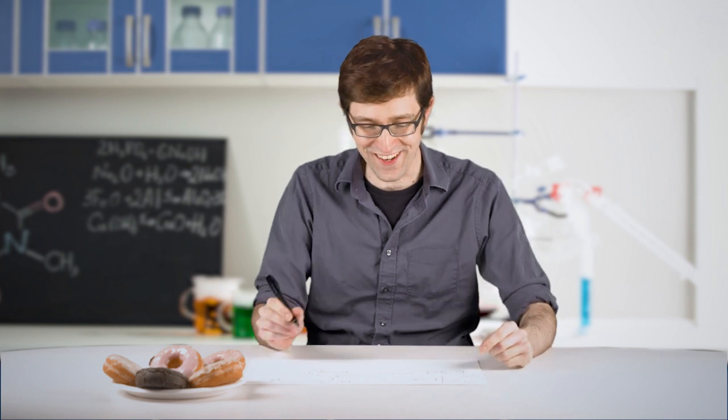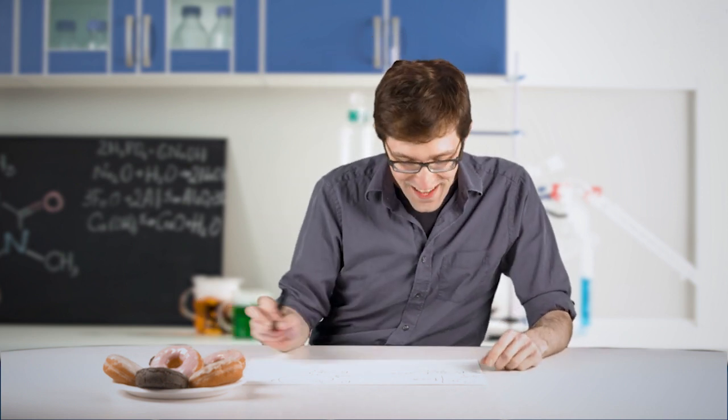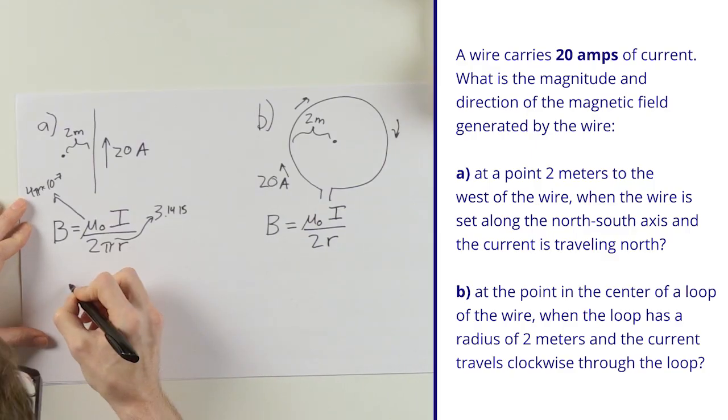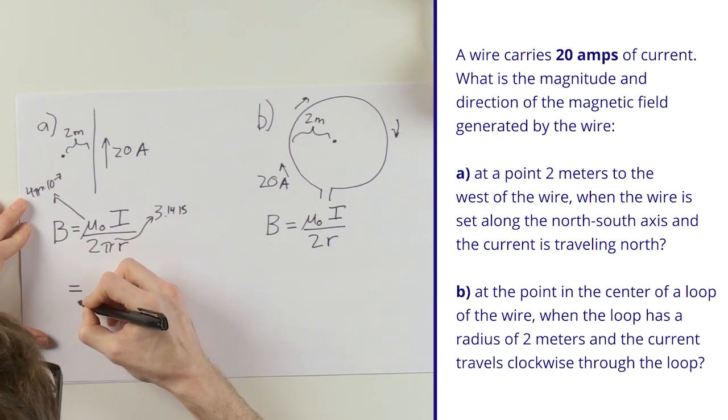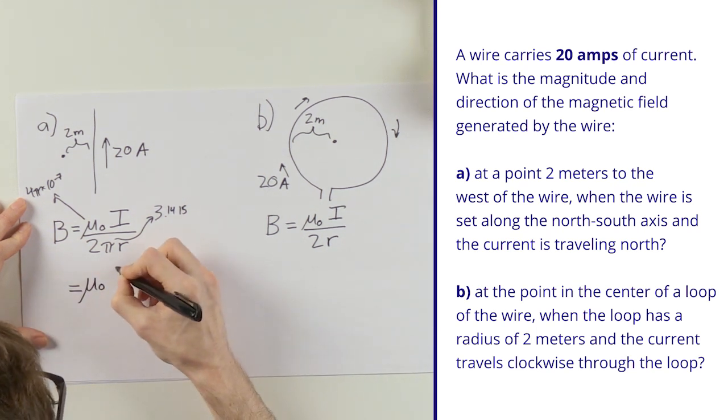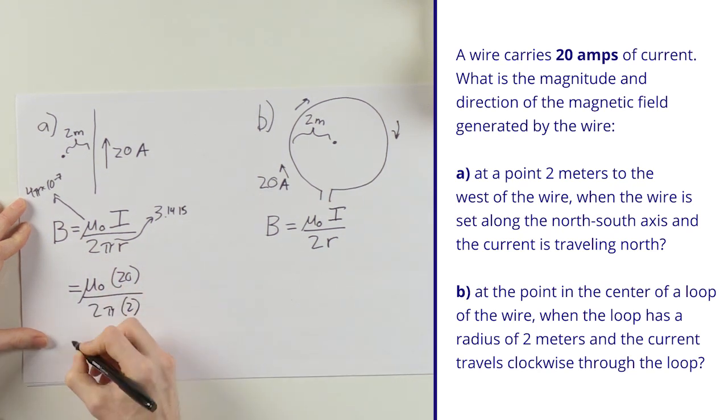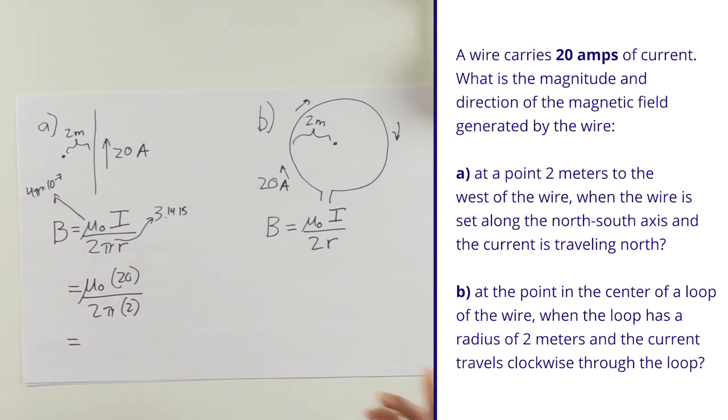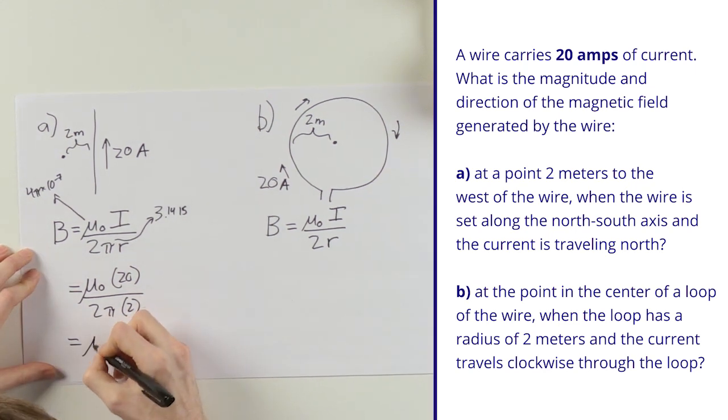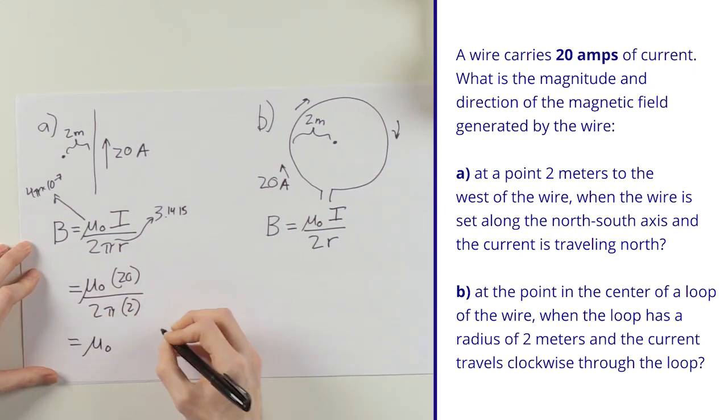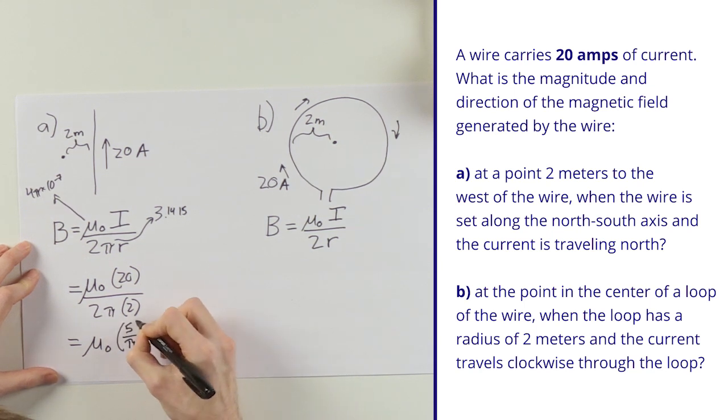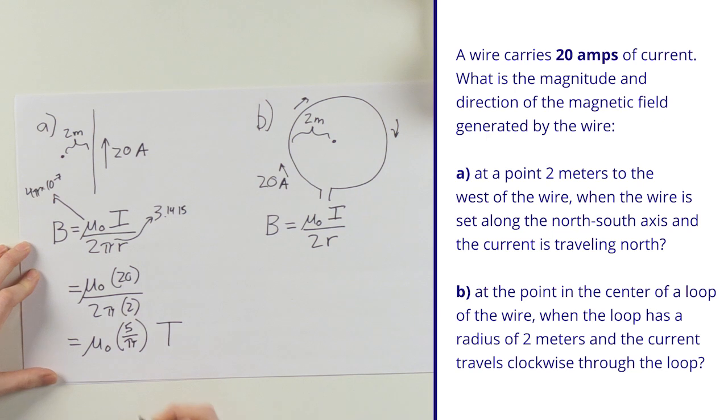Now I just gotta plug things in. The current here is 20 on the top, the distance r is 2 on the bottom. Do a little math: 2 times 2 is 4, 20 divided by 4 is 5. So it is permeability of free space times 5 over π teslas. That's gonna be my unit here, it's just the unit for magnetic field.